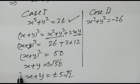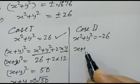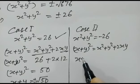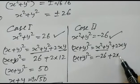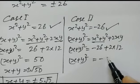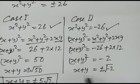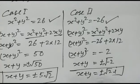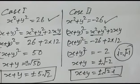Case 2: x squared plus y squared equals minus 26. Then (x plus y) squared equals minus 26 plus 2 times 12 equals minus 2. So x plus y equals plus or minus square root of minus 2, which equals plus or minus i root 2, since i equals square root of minus 1. Thank you friends.